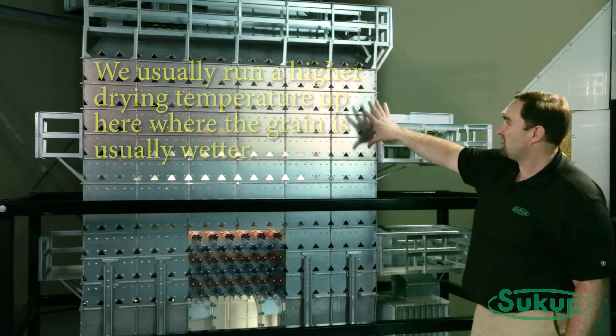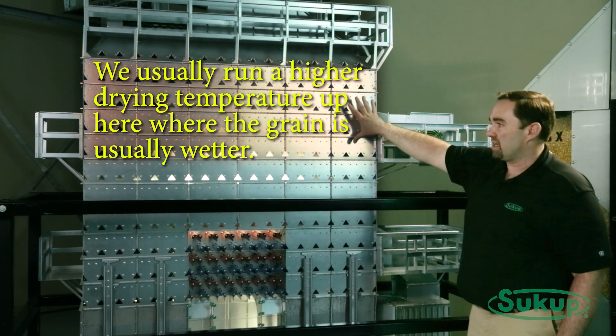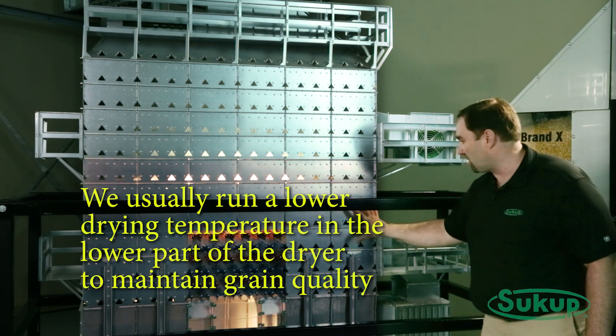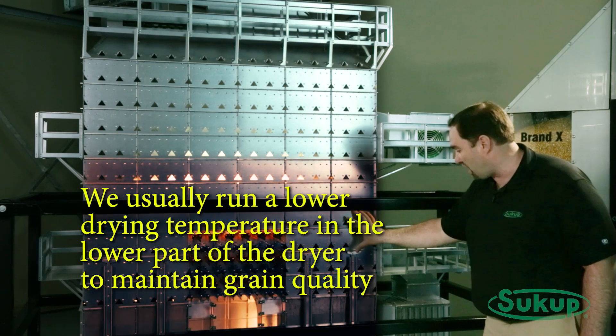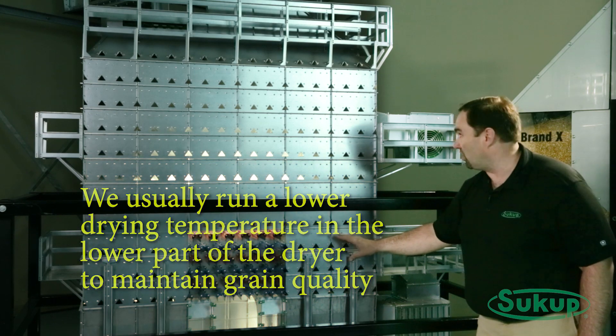On your upper fans, we usually run a higher drying temperature where the grain is wetter. We can get a little more capacity that way without sacrificing grain quality. Down in the lower part of the dryer when that grain is becoming more dry, we usually run a lower drying temperature down here to maintain the grain quality.